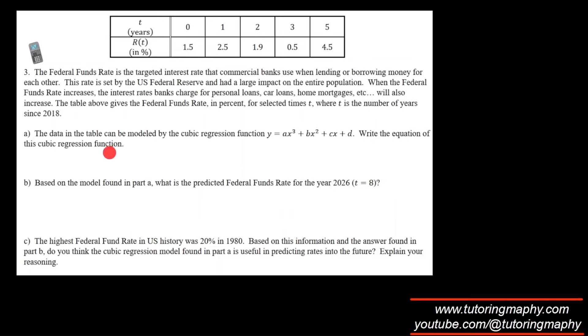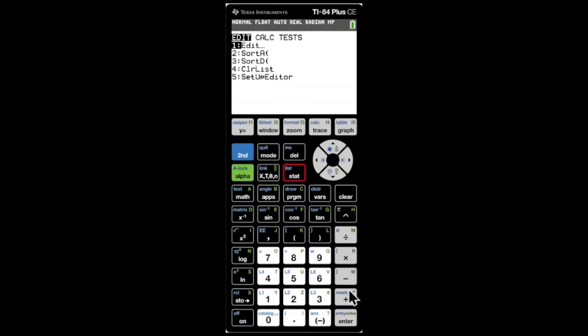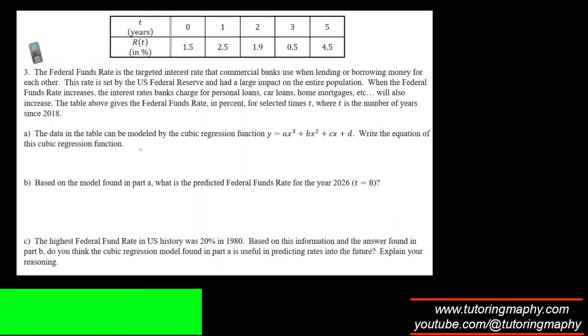Type in zero, enter, and then just type in all the other numbers. After typing in, we click on STAT, calculator. This is a cubic regression, so go on option 6, press enter, go to calculate, press enter again, and this is our model.